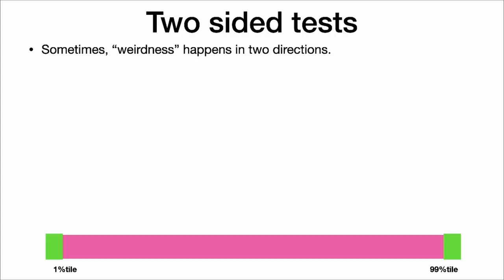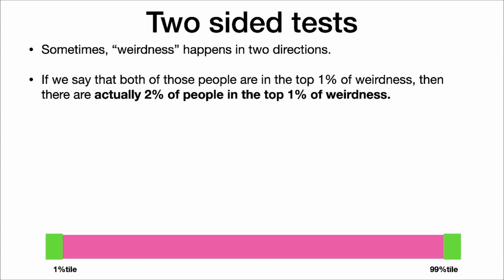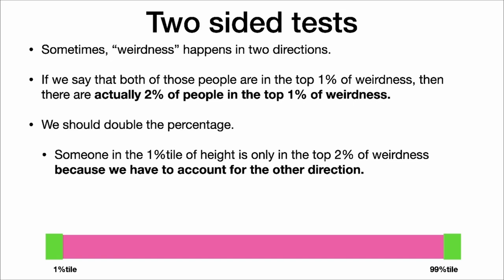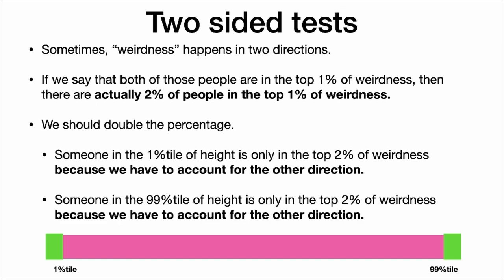We also have a two-sided test, where sometimes weirdness happens in two directions. If we say that both people — the very short and very tall — are in the top 1% of weirdness, then there are actually 2% of people total. We can see this in the two green areas, which add up to 2%. So we should double the percentage: they're really only in the top 2% of weirdness. Someone at the 1st percentile of height is in the top 2% of weirdness because we have to account for the other direction.